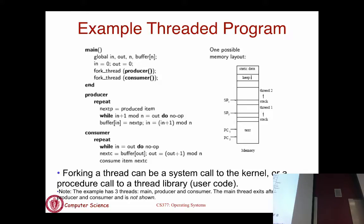If you have multiple cores and want true parallelism, you need kernel-level threads, because with user-level threads the OS doesn't know there's more than one thread and can only schedule that process once on one core. To take advantage of true parallelism on multiple cores, you have to use kernel-level threads, or you have to use multi-process applications where processes can run on different cores.